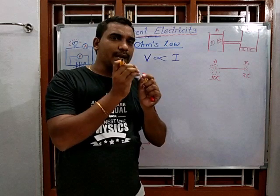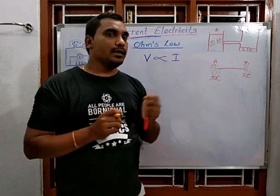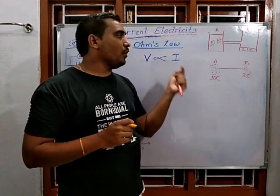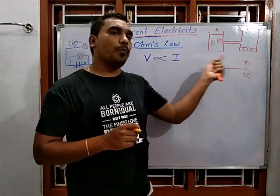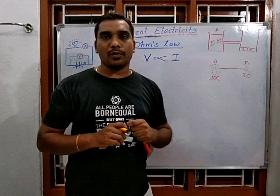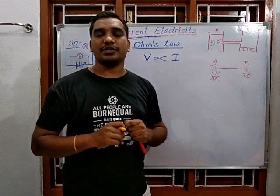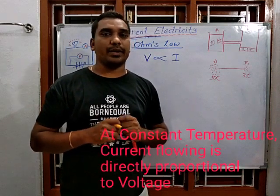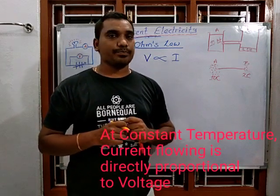In Ohm's Law, at constant temperature, the current flowing between two points is directly proportional to the potential difference between them.